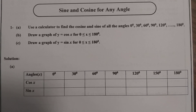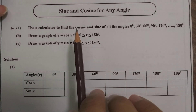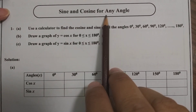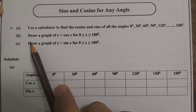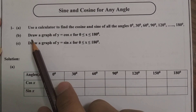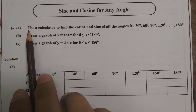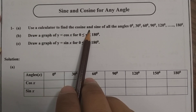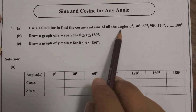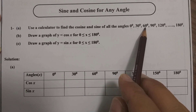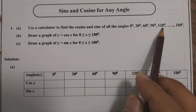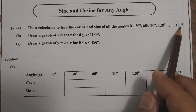Welcome to G-Math Academy. In this video we are going to talk about sine and cosine for any angle. In this question we are given: use a calculator to find the cosine and sine of all the angles: 0°, 30°, 60°, 90°, 120°, and so on till 180°.